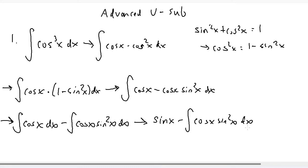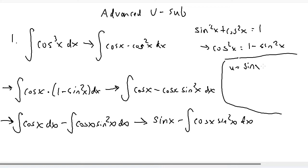Now we can use u-substitution. If I make my u equal to sine of x, then du will be cosine x dx. And that would make dx equal to du over cosine x.